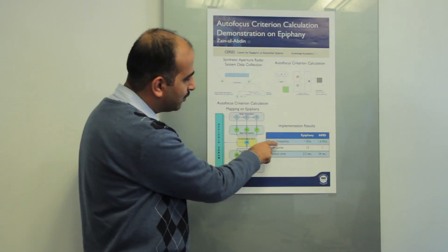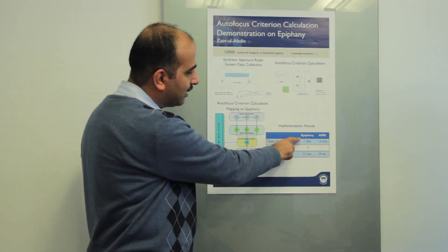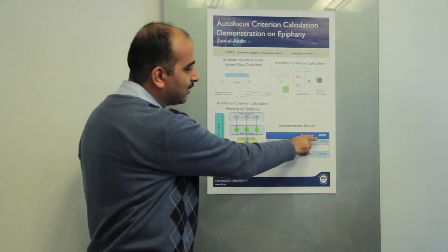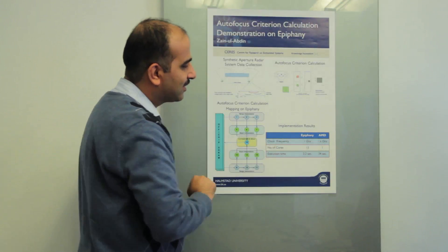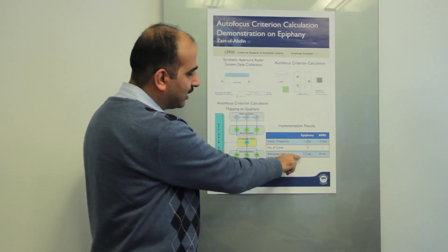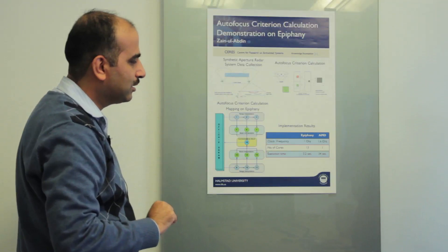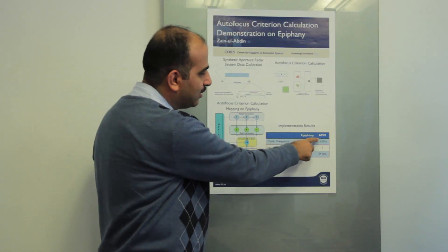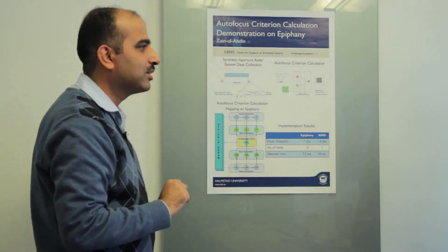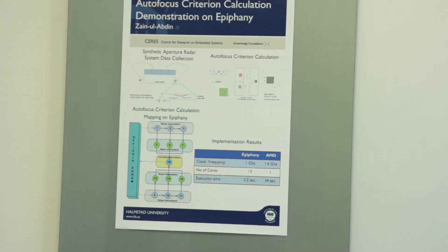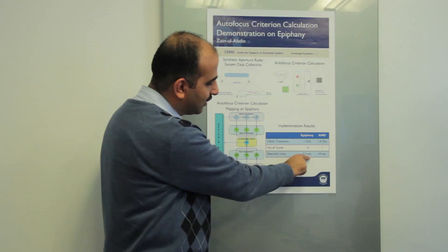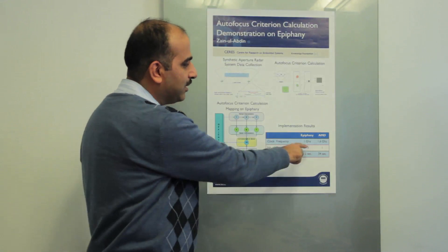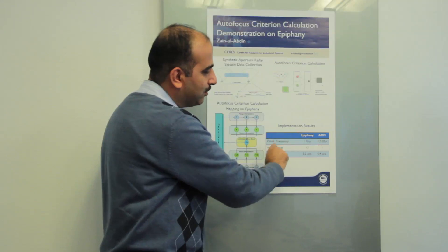In the implementation results, we are comparing the Epiphany architecture running on one gigahertz clock with the AMD processor running at 1.6 gigahertz clock. In terms of execution time, we took 3 seconds to compute a particular image size, whereas the AMD is using 34 seconds to compute the same image size. The Epiphany architecture is running the same algorithm almost 10 times faster than the AMD version, even though the AMD version is running at 1.6 gigahertz, a faster clock compared to the Epiphany architecture.